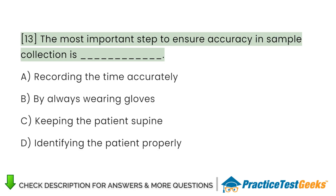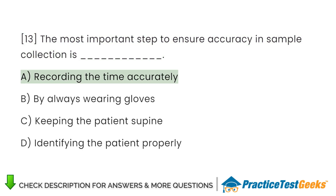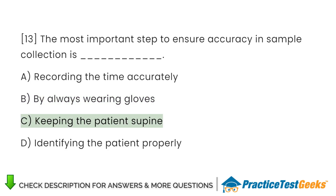The most important step to ensure accuracy in sample collection is A. Recording the time accurately. B. Always wearing gloves. C. Keeping the patient supine. D. Identifying the patient properly.